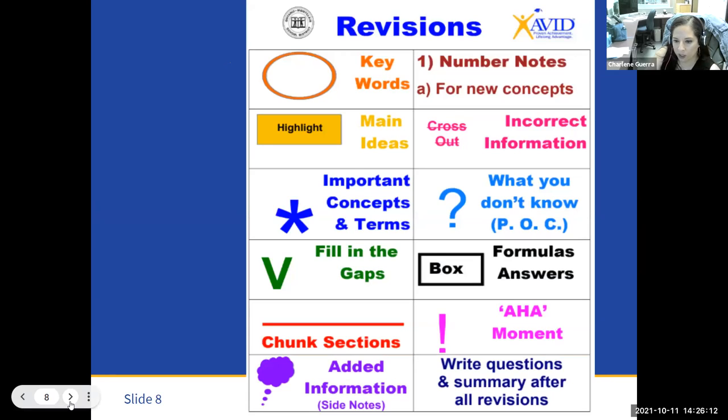These are some notes for revision that students can definitely use. Circling keywords, highlighting main ideas, using an asterisk to identify an important key concept or term, filling in the gaps by using this little icon, chunking sections by separating notes. So if we were talking about notes for various eras of history and really just separating that by drawing a line to show division, adding information by putting in thought bubbles or using post-it notes, numbering notes and new concepts, crossing out incorrect information. Whatever they don't understand, they can use a question mark, call that their point of confusion. We really know that this is something they're struggling with, and they may need to work with a partner to clarify some ideas.